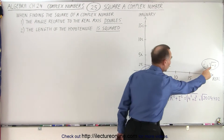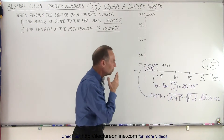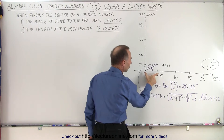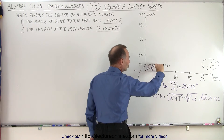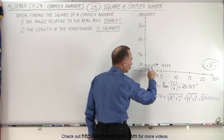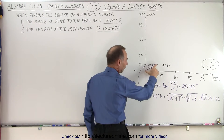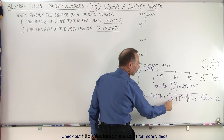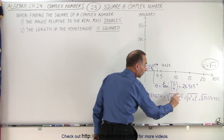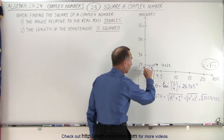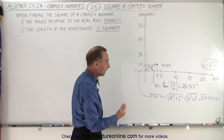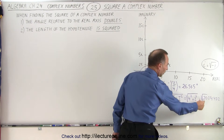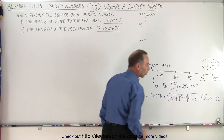Remember that i is the square root of negative 1. Looking at the position of that point on the real-imaginary plane, I'm 4 units away in the real direction and 2 units in the imaginary direction. To find the distance from the origin to that point, we use the Pythagorean theorem. That length equals the square root of the real part squared plus the imaginary part squared — we're not squaring the i itself, because i squared gives negative 1. So that's the square root of 4 squared plus 2 squared, which is the square root of 20, about 4.472.